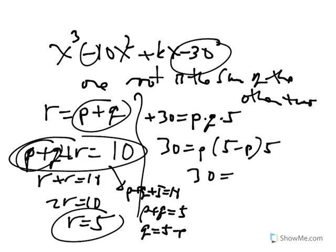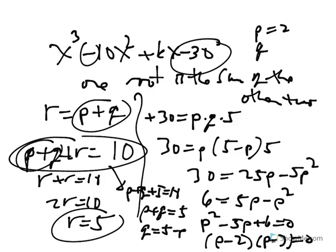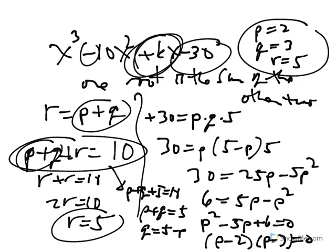Since r is 5, p plus q plus 5 equals 10, so p plus q equals 5, or q equals 5 minus p. Substituting: p times (5 minus p) times 5 becomes 25p minus 5p squared. Dividing everything by 5 gives p squared minus 5p plus 6 equals 0, which factors to (p minus 2)(p minus 3) equals 0. So p is 2 or 3, meaning the roots are 2, 3, and 5. k is the sum of the roots taken two at a time: 2 times 3 plus 2 times 5 plus 3 times 5 equals 6 plus 10 plus 15 equals 31.